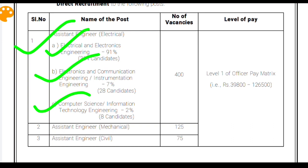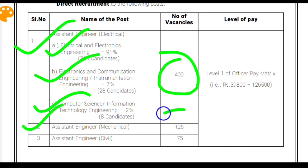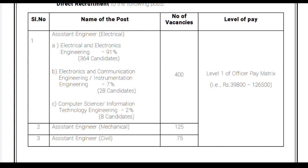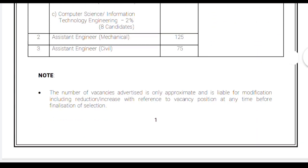The total number of vacancies in Assistant Engineer Electrical are 400 numbers, Assistant Engineer Mechanical 125 numbers, and Assistant Engineer Civil is 75 numbers. About the level of pay, it is Level 1 and the pay scale starts from ₹39,800 till ₹1,26,500.